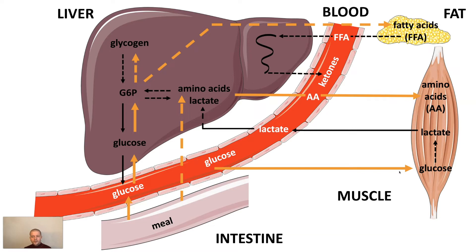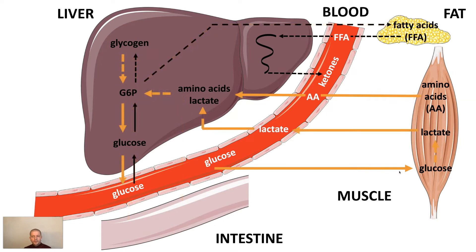The liver stores excess glucose as glycogen and is able to produce fat from it. All carbohydrates are eventually broken down into glucose, which is the main energy source for the body. Specific organs such as the brain need glucose to function properly. Sometime after a meal, the liver will break down its glycogen to maintain stable glucose concentrations in the blood. It can also make glucose from muscle-derived protein and lactate in a process called gluconeogenesis. Under these circumstances, the liver is mainly a glucose-producing organ.